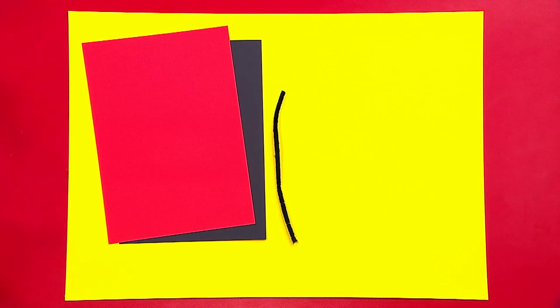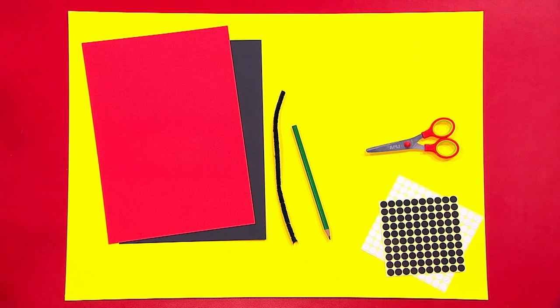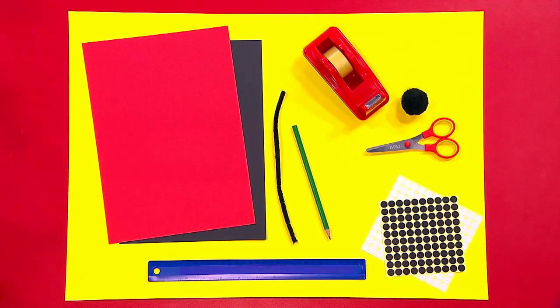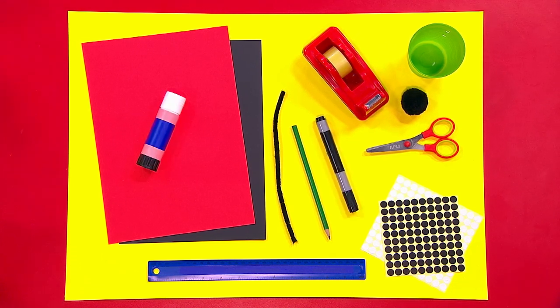You'll need black card, red card, a pipe cleaner, a pencil, scissors, black and white stickers, a pom pom, sticky tape, a ruler, something round to draw around like a cup, a black pen, and a glue stick.